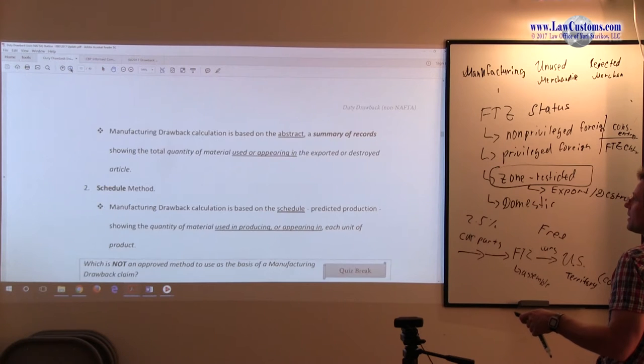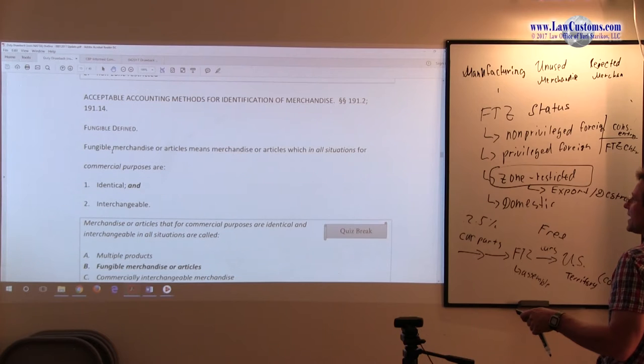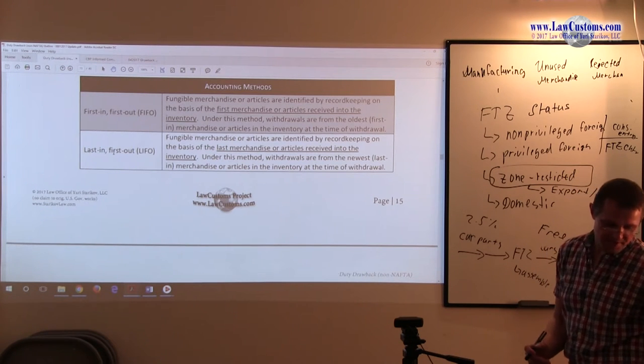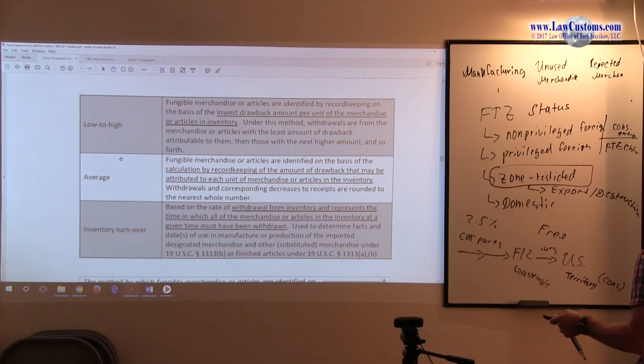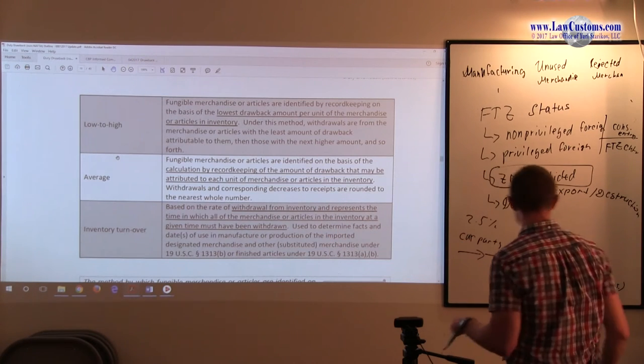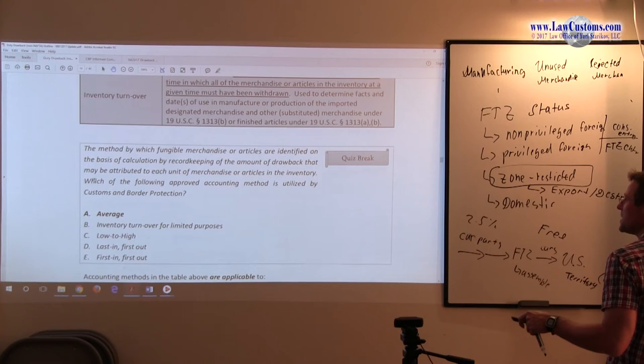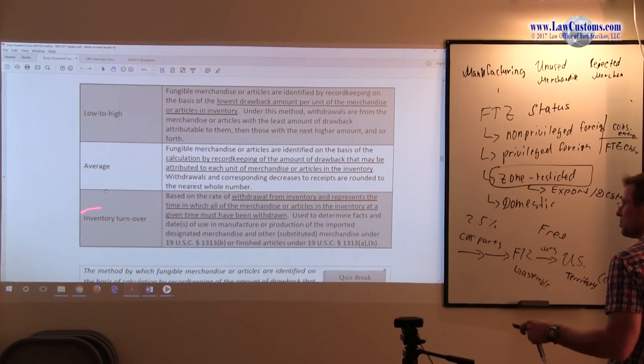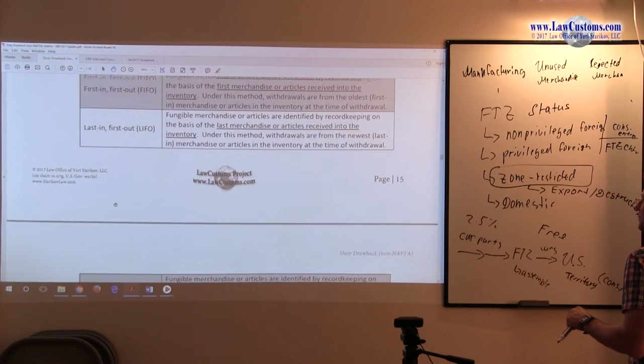The acceptable accounting methods for identification of merchandise are provided in four categories. There is a fifth category, inventory turnover, which is used for a separate purpose. Although the 19 CFR compliance publication treats this method as separate and distinct, for customs broker exam purposes, keep in mind that inventory turnover has been asked about as an accounting method, so I include it as part of the list.